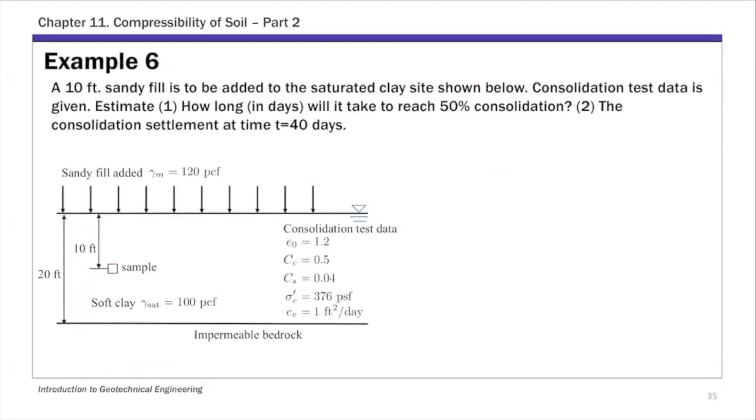Let's go over Example 6 first. This example covers the first two questions I mentioned. One is to estimate the time t to reach 50% degree of consolidation, and second is to estimate consolidation settlement at a particular time. In this case, after 40 days the sandy fill is put on top. For this example, we are given 10 feet of sandy fill on top, and consolidation test data. Let's look at these two questions.